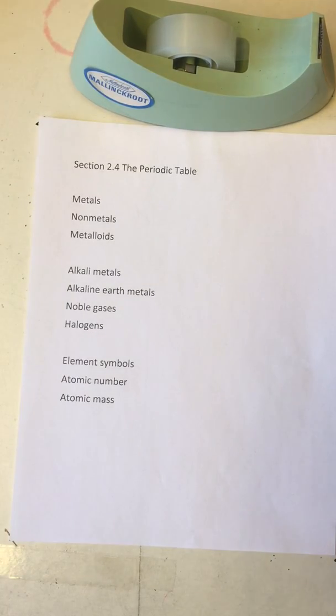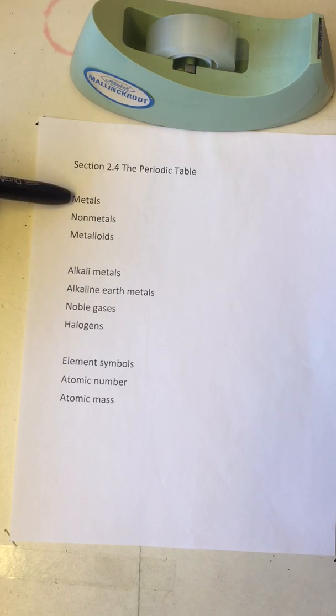This is a lecture on section 2.4 of the periodic table. There are some terms we should be familiar with when discussing the periodic table, and the first category are metals, nonmetals, and metalloids.